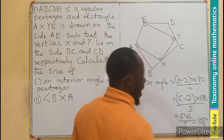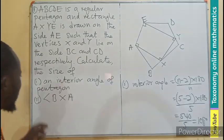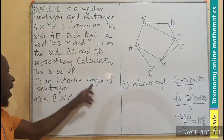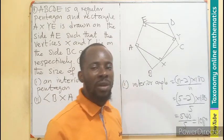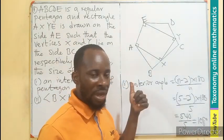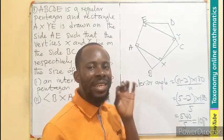3 will multiply this to give us 540 divided by 5. And that will be 108. So the first question, find the interior angle of a pentagon. So the interior angle of a pentagon is what? A regular pentagon at this point will be 108 degrees.